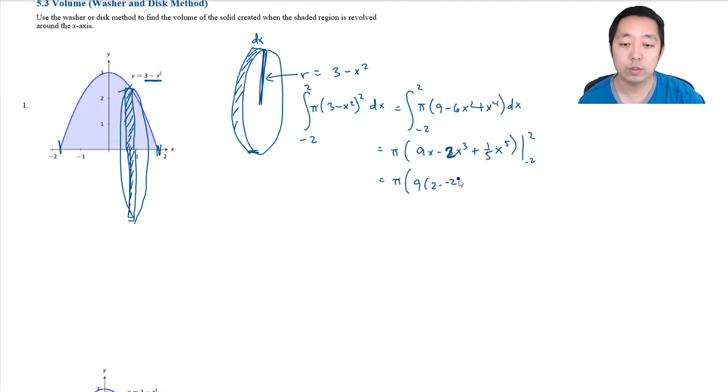And so that's π times (9 times 2 minus -2 minus 2 times 2³ minus 2 times -2³ plus (1/5) times 2⁵ minus (1/5) times -2⁵). So this is π times (36 - 32 + 64/5). This is 20/5, so that's 84/5 π.